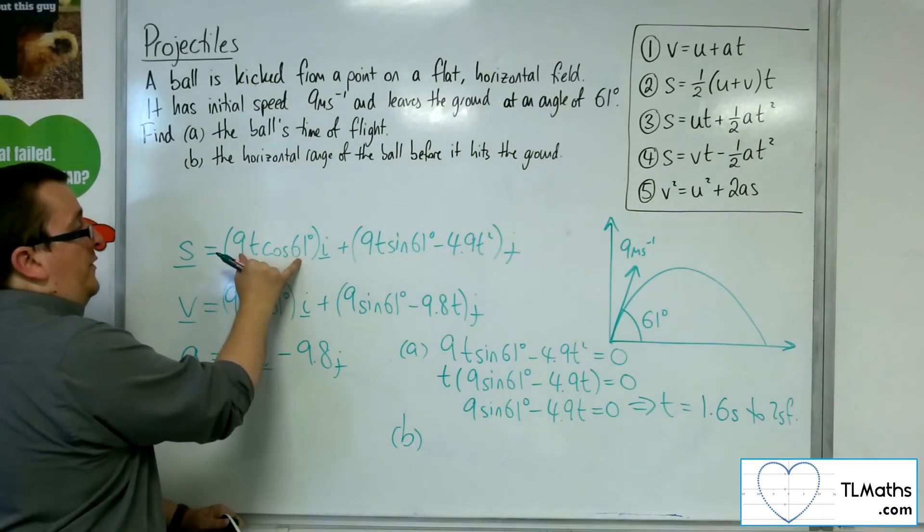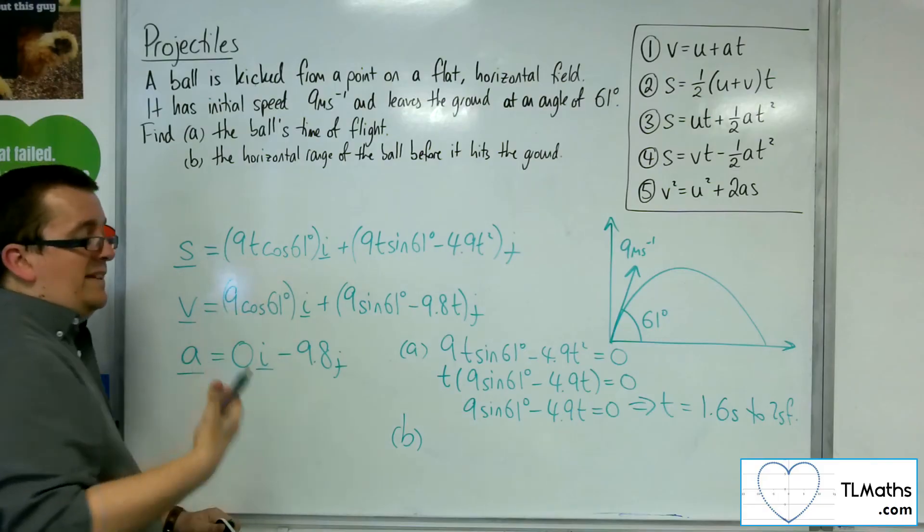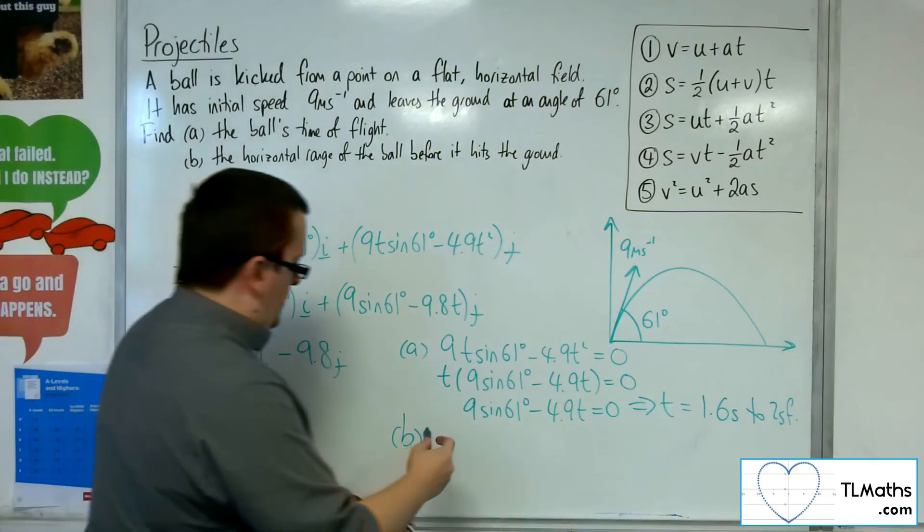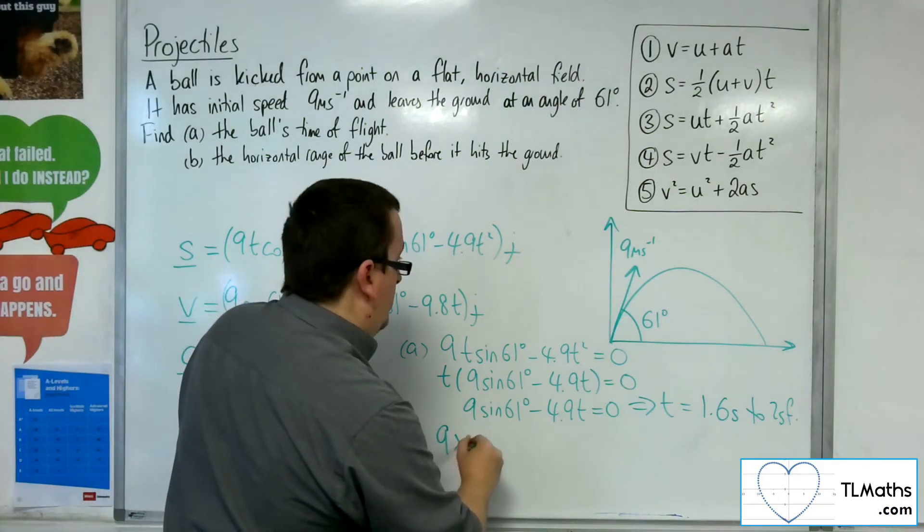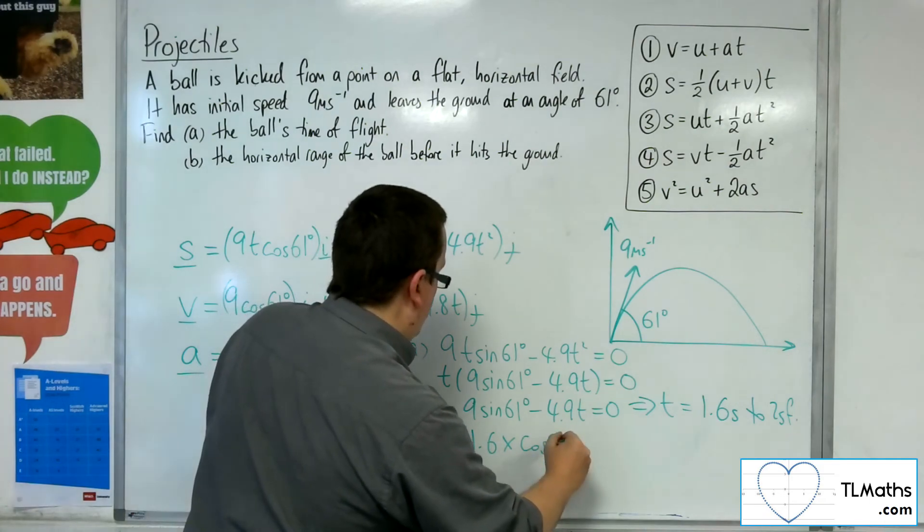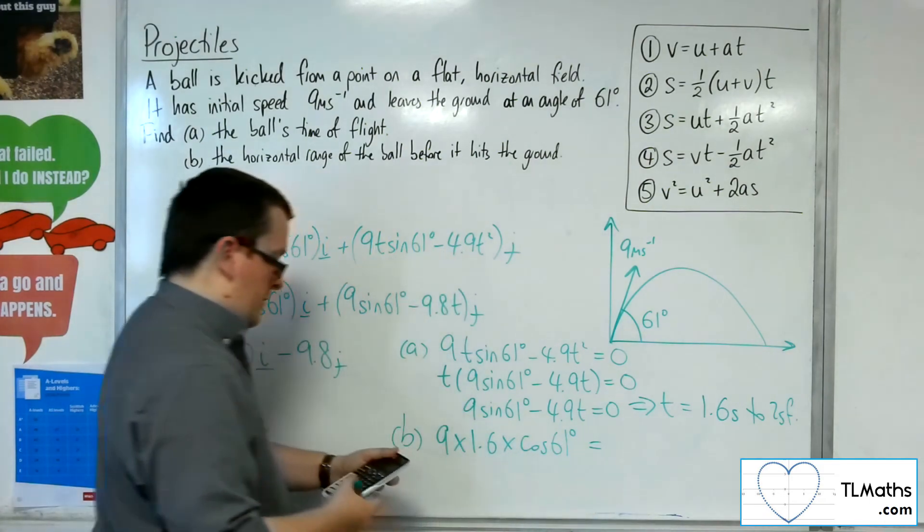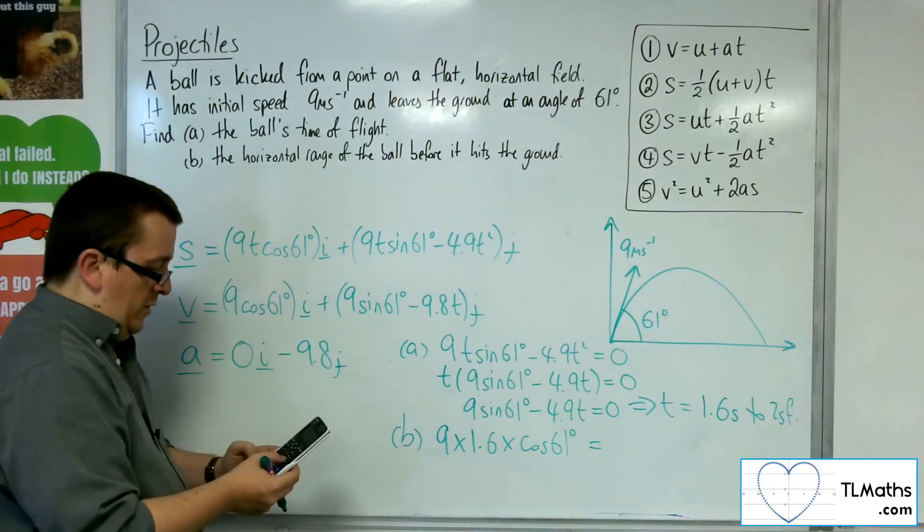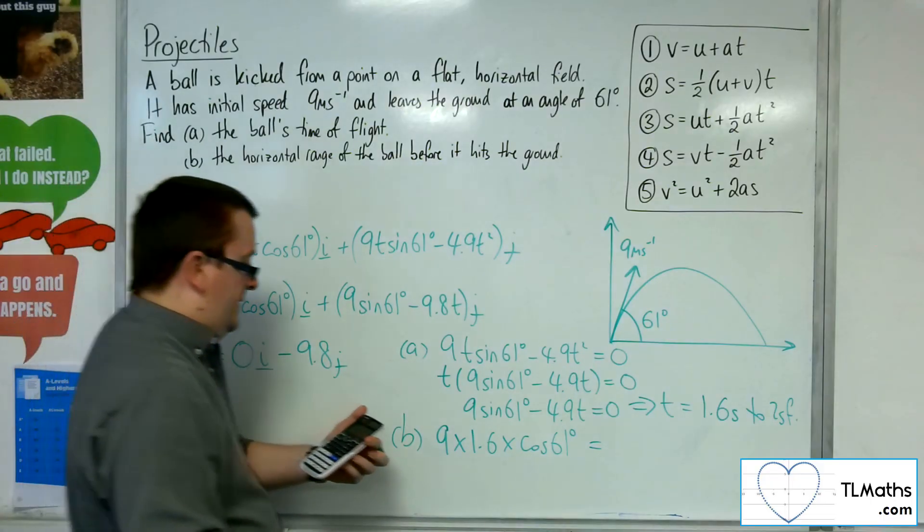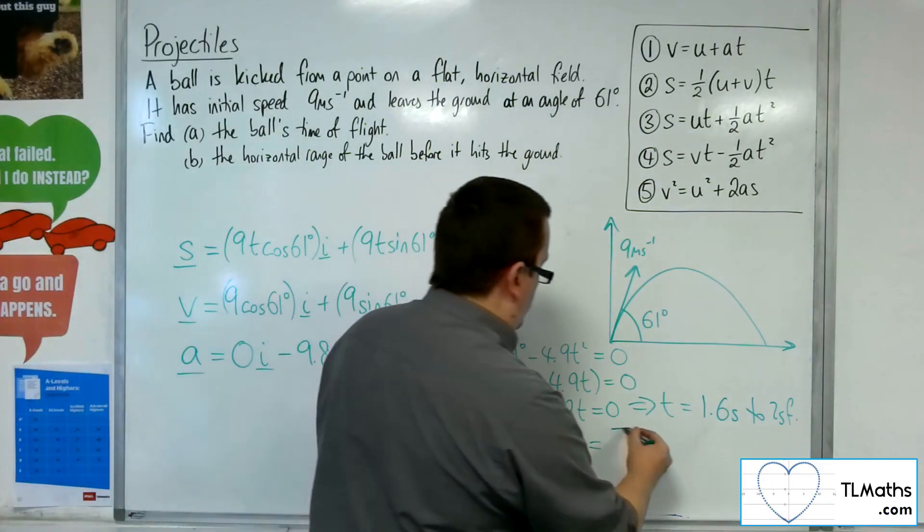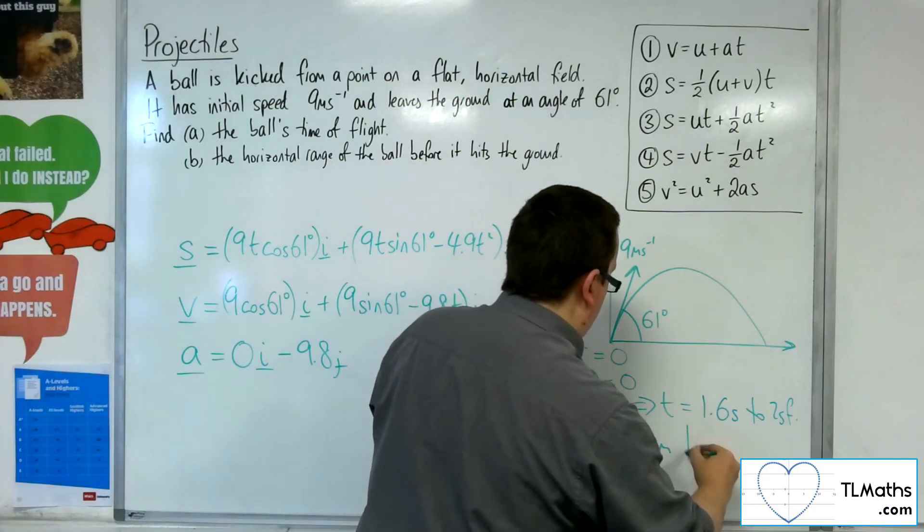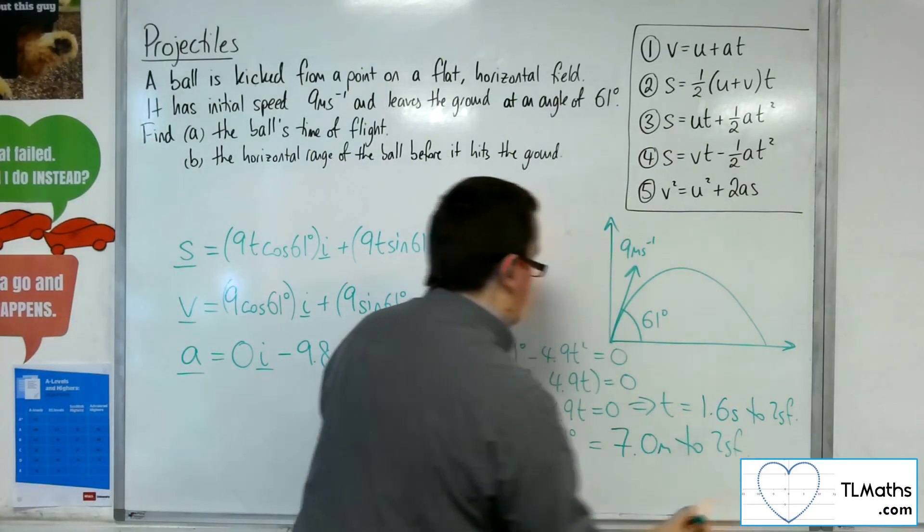So I can substitute the 1.6 into this, and that tells me how far the ball's gone. We've got 9 times t times cosine of 61, so times by 9 times by cos of 61 is 7.009, so 7.0 metres to two sig fig.